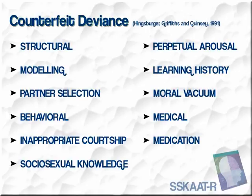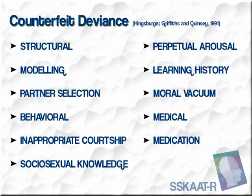When a person with intellectual disabilities presents with an inappropriate sexual behavior, there's often the assumption that it may be a paraphilia, as defined in the Diagnostic and Statistical Manual. However, Hingsberger, Griffis and Quincy, in 1991, wrote about the concept of counterfeit deviance. They gave a number of examples where individuals with intellectual disabilities presented with an inappropriate behavior that had many different causes — for example, the structure in which the individual lives, modeling, an inappropriate selection of partners, or even a behavioral challenge. It could be that they don't know how to engage in appropriate courtship or a lack of socio-sexual knowledge.